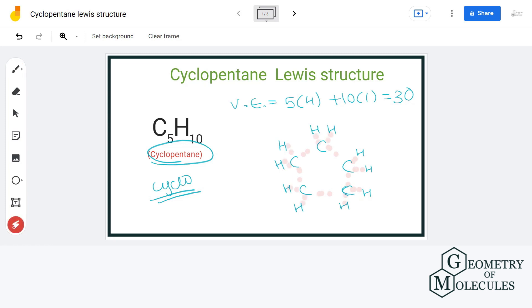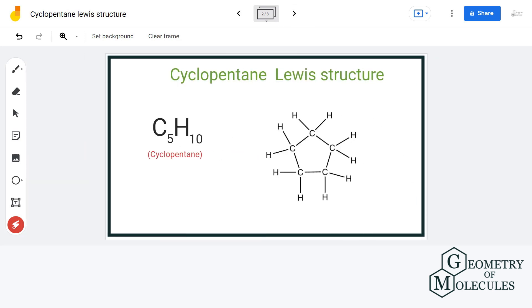Now as you can see, by doing that we have used all our valence electrons and each and every atom has a complete outer shell and zero formal charge in this Lewis structure. So this is the final Lewis structure of cyclopentane.